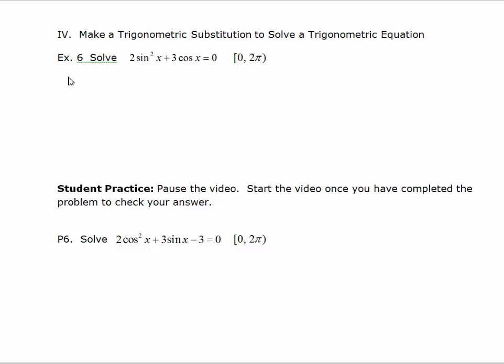When we look at example 6, we see that this might be a trig equation in quadratic form, or we may be able to get it to quadratic form, but we've got two different trig functions, so that won't work — that's the same as having two different variables when you factor. Because of the Pythagorean identities, we're allowed to make substitutions for sine squared, cosine squared, any of the trig functions squared.